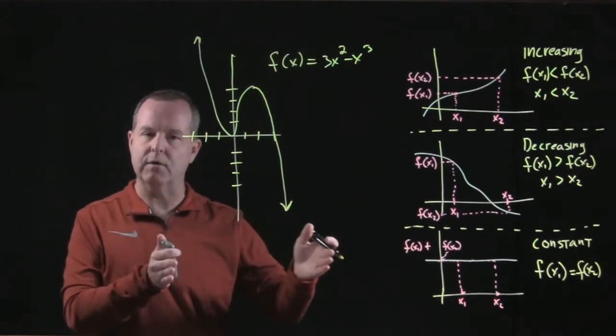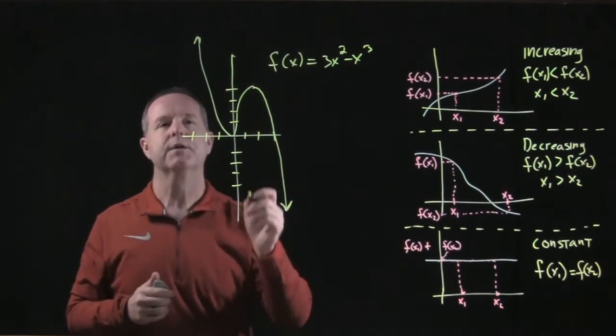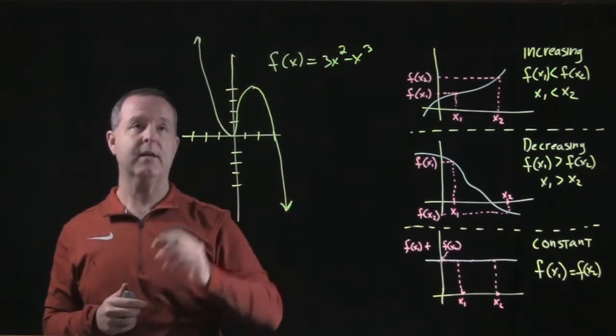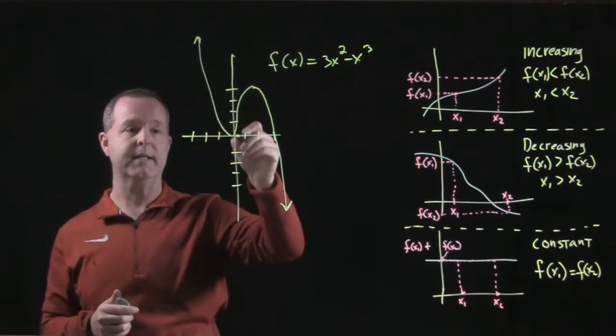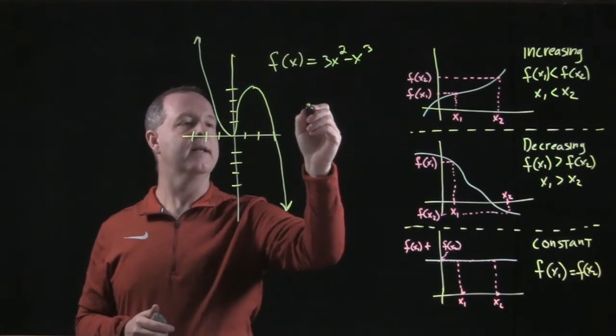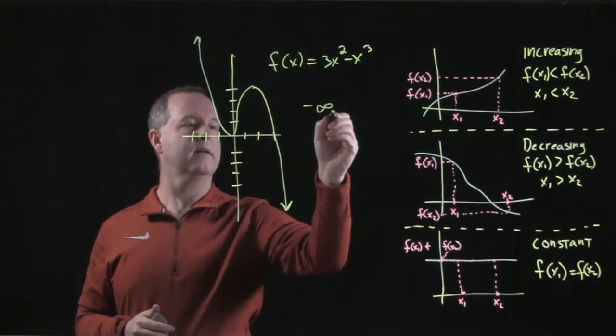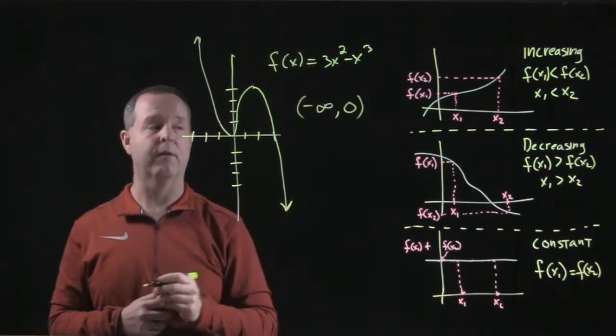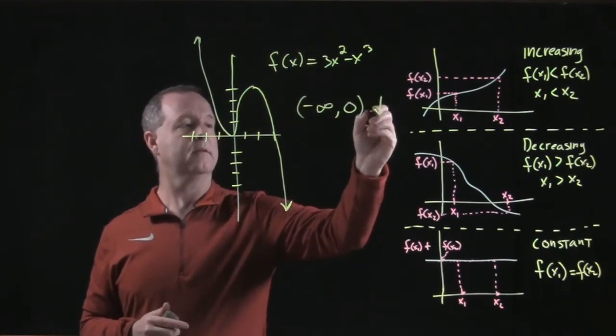So let's break it up on intervals as we move left to right. For example, on this first interval, I see the graph from left to right is decreasing. So from negative infinity to zero, over that interval, my graph is decreasing.